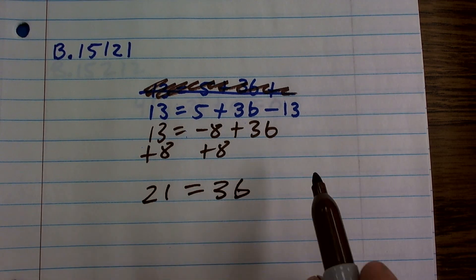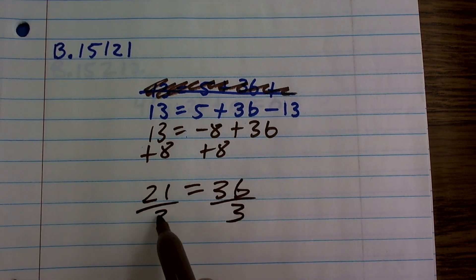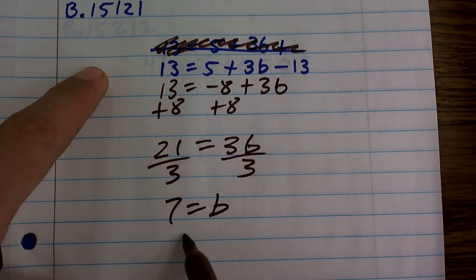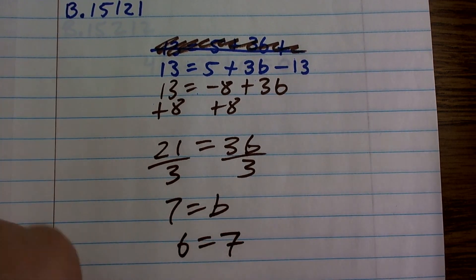Now, I undo multiplication by dividing by 3 on both sides, and I get 7 equals b. Then, I like to just rewrite this around or switch them around, where I can say the value of b is equal to 7.